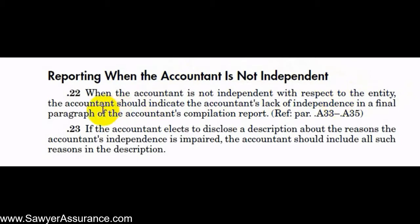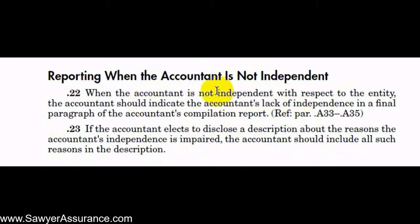If we're not independent with respect to the entity, we should indicate our lack of independence in a final paragraph of our compilation report. If we elect to disclose the reason why our independence is impaired, we should include those reasons in that paragraph. We don't necessarily have to say why our independence is impaired, but if we do, we need to discuss it in that final paragraph. We have some explanatory material at A33-35, so let's go down there for more information on how to apply this requirement.